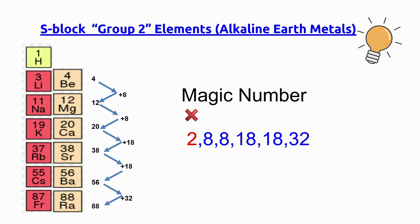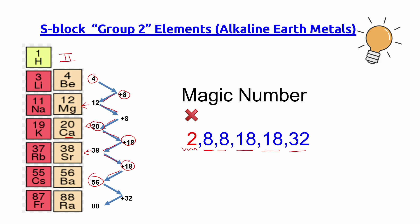Now let's practice writing the group 2 elements with the help of magic numbers. Group 2 starts from period 2, so we will not take 2 as the magic number; we will start from 8, 8, 18, 18, 32. The atomic number for beryllium is 4. 4 plus 8 gives 12, which is the atomic number for magnesium. 12 plus 8 gives 20, the atomic number for calcium. 20 plus 18 gives 38, the atomic number for strontium. 38 plus 18 gives 56, the atomic number for barium. 56 plus 32 gives 88, which is the atomic number for radium.